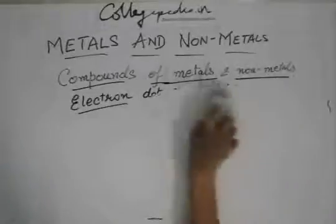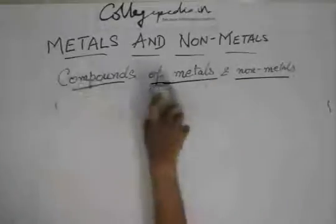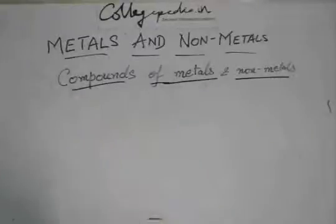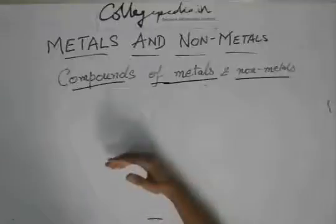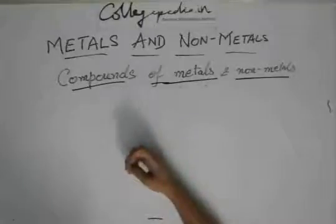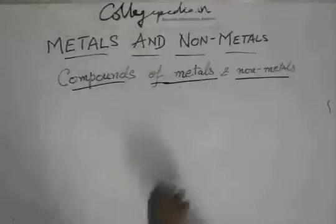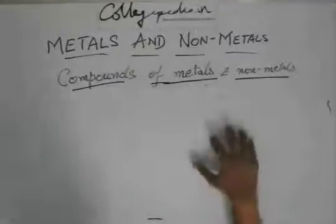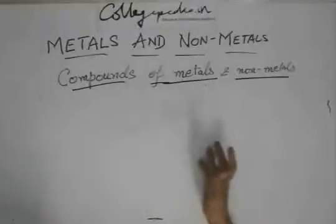So this is about electron dot structures. In this combining, you must have seen that the non-metal like O, Cl, these were always the ones which were accepting the electrons. And the metals were the ones which were donating the electrons. And that is the characteristic property.